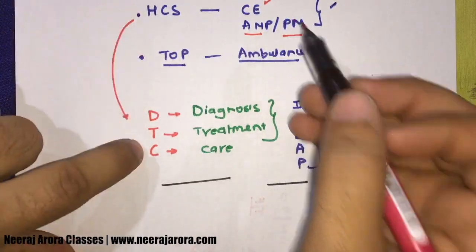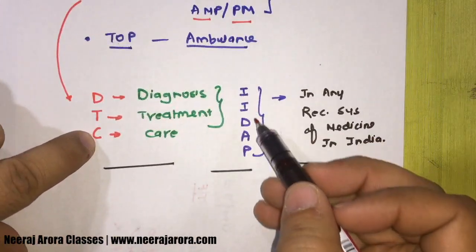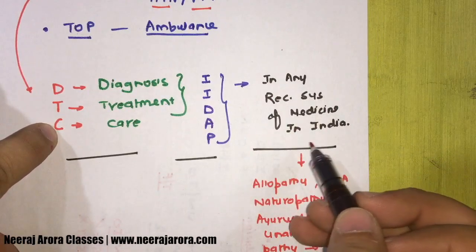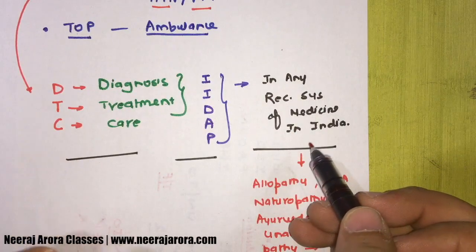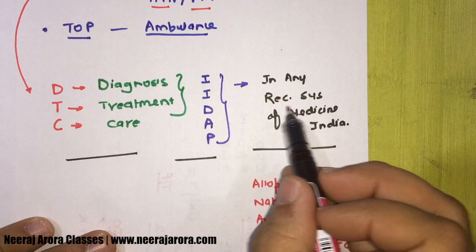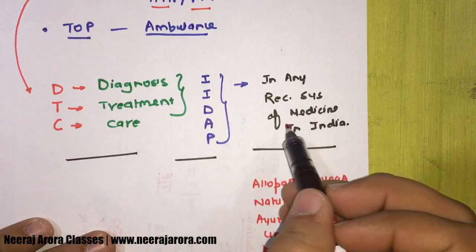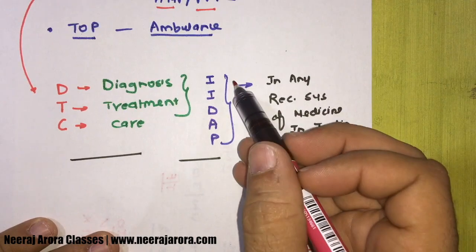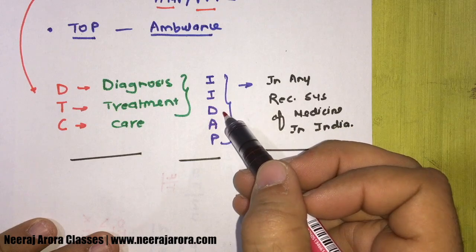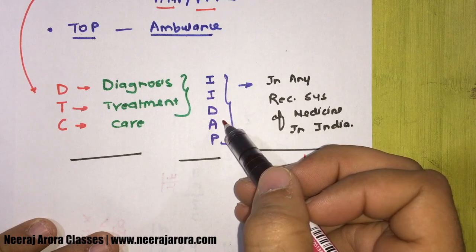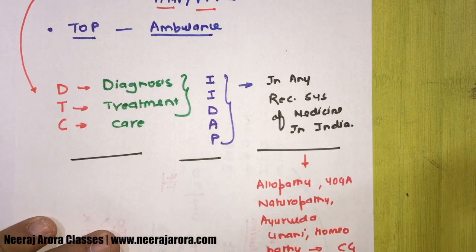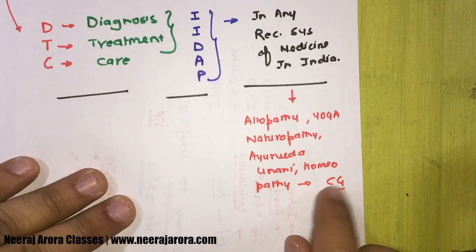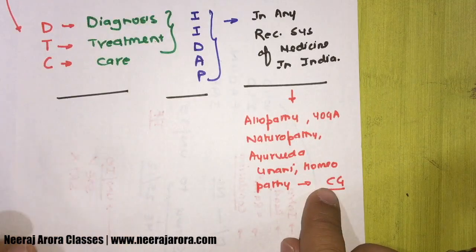Healthcare service ka meaning hai DTC - Diagnosis, Treatment, Care. IIDAP - Illness, Injury, Deformity, Abnormality, Pregnancy. In any recognized system of medicine in India. Yeh IIDAP hai - bilkul mat ghabraiye. Aur ye saare recognize systems hain, aur koi bhi system recognize ho sakta hai jise recognize kare Central Government.